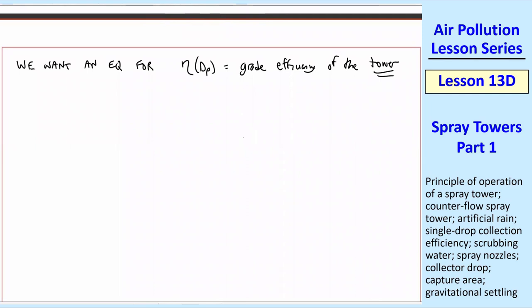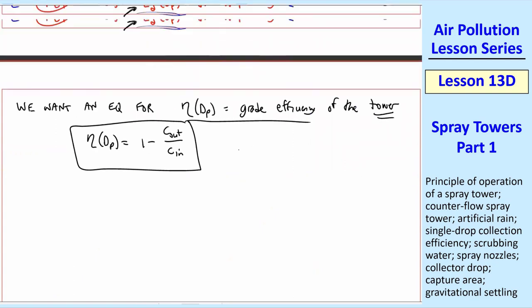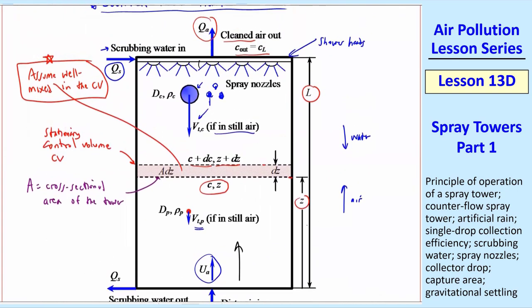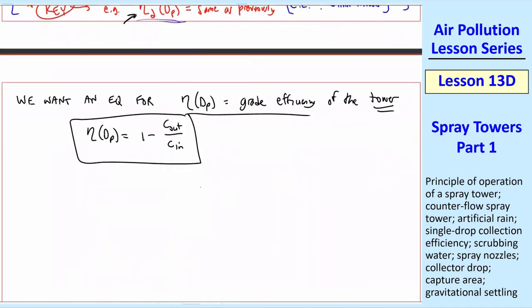For now, let's just look at the entire spray tower as a whole. In terms of mass concentrations, of course, this is equal to eta DP is equal to 1 minus C out over C in. Where, again, C in, or sometimes we call that C sub not, is what's coming in, the mass concentration coming in, and C out is the mass concentration coming out. And this equation is always true for any efficiency that we define.